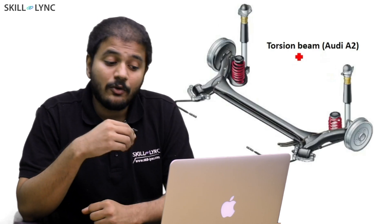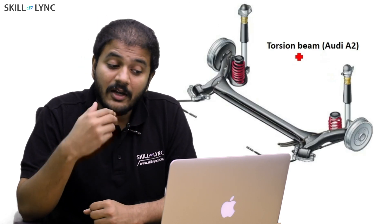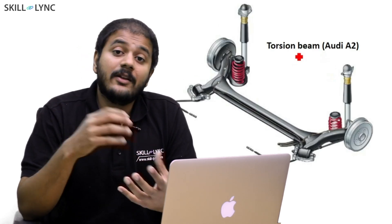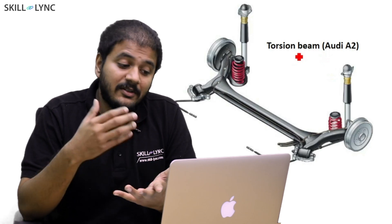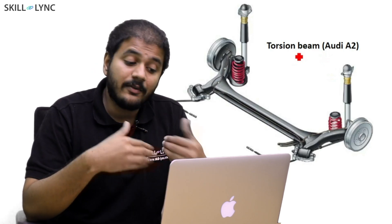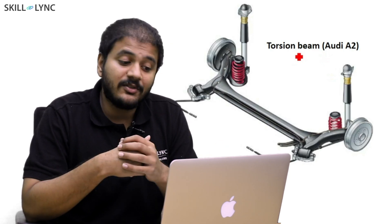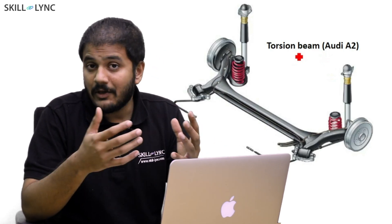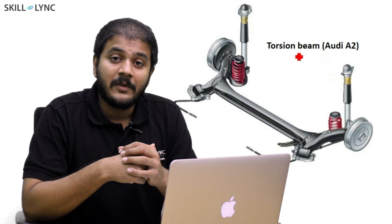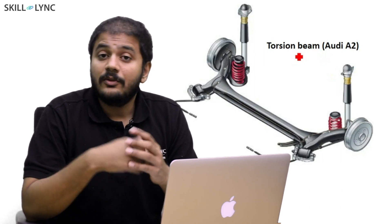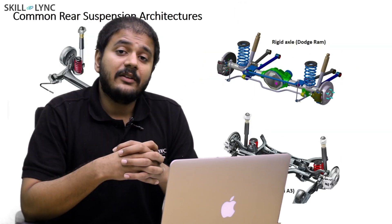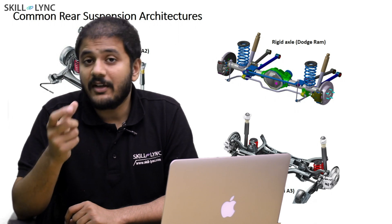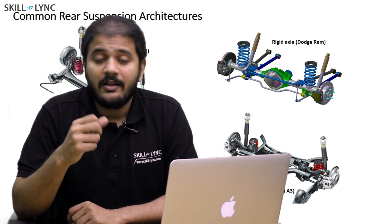Whereas if you take a look at the Audi A2, it's still a premium car, but it's relatively low price. So in this case, we go with a very simple suspension system such as the torsion beam to take care of the ride handling. The second issue can be packaging.